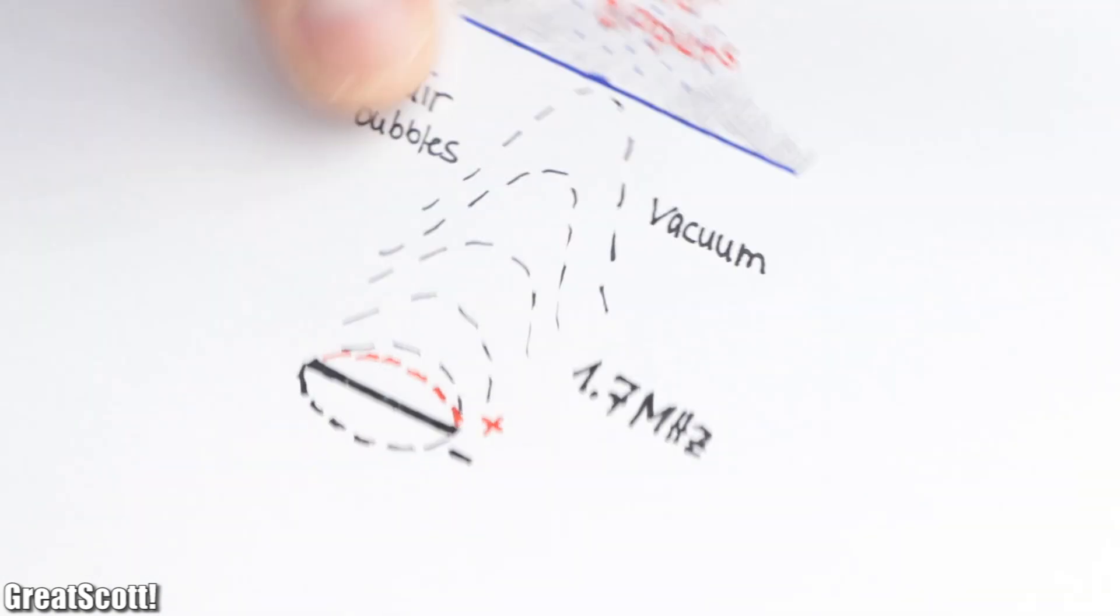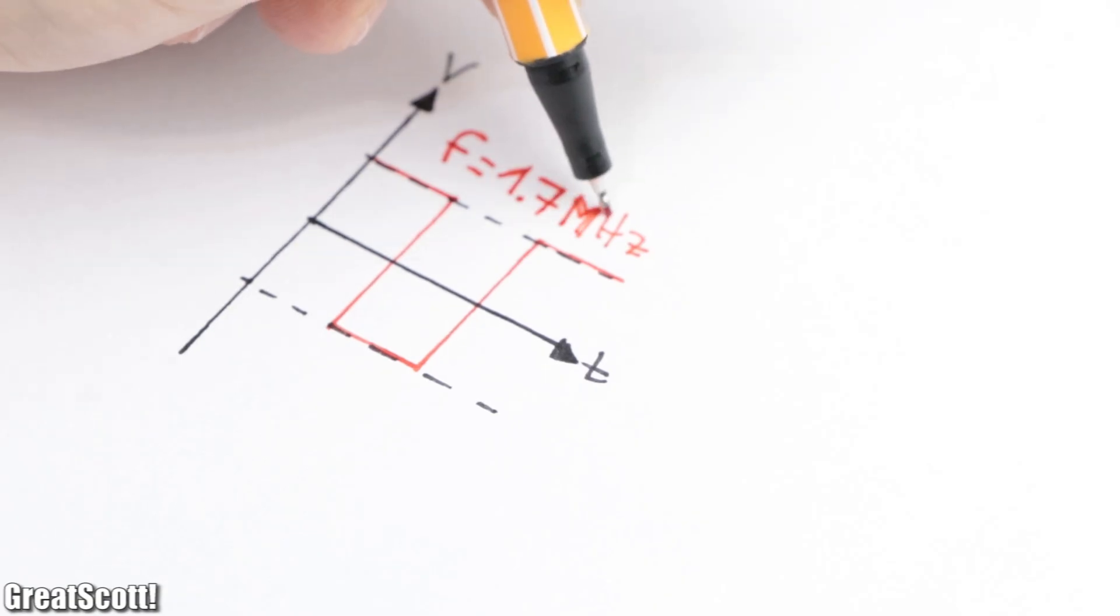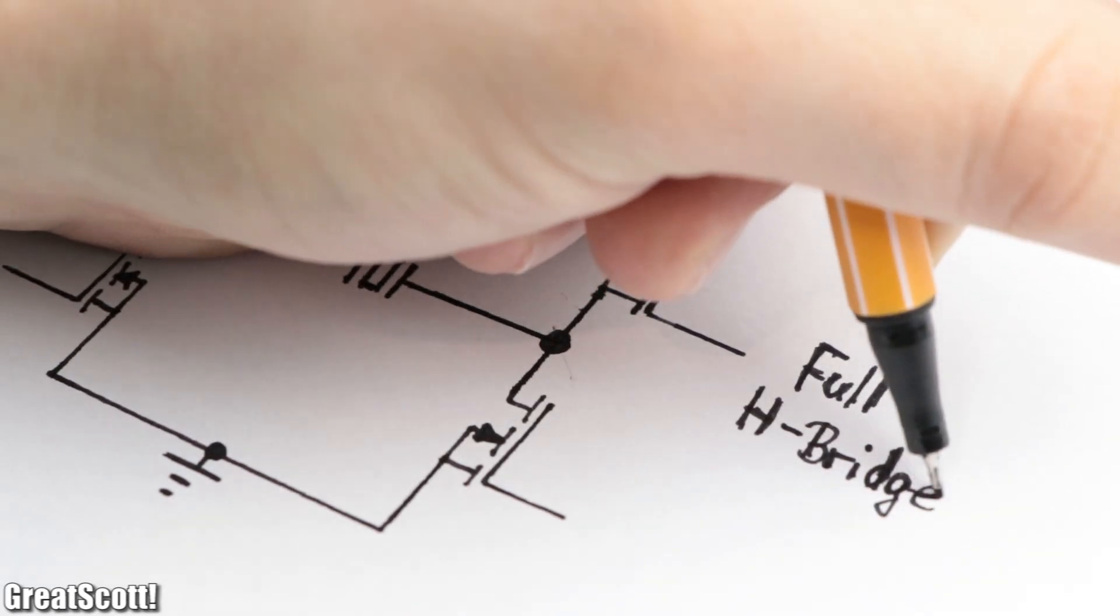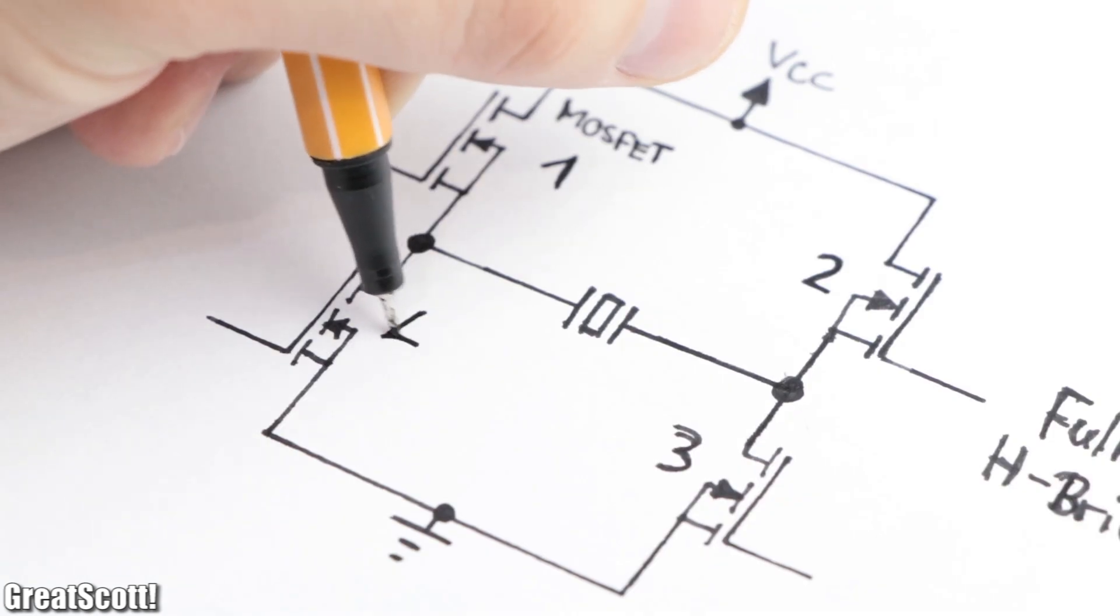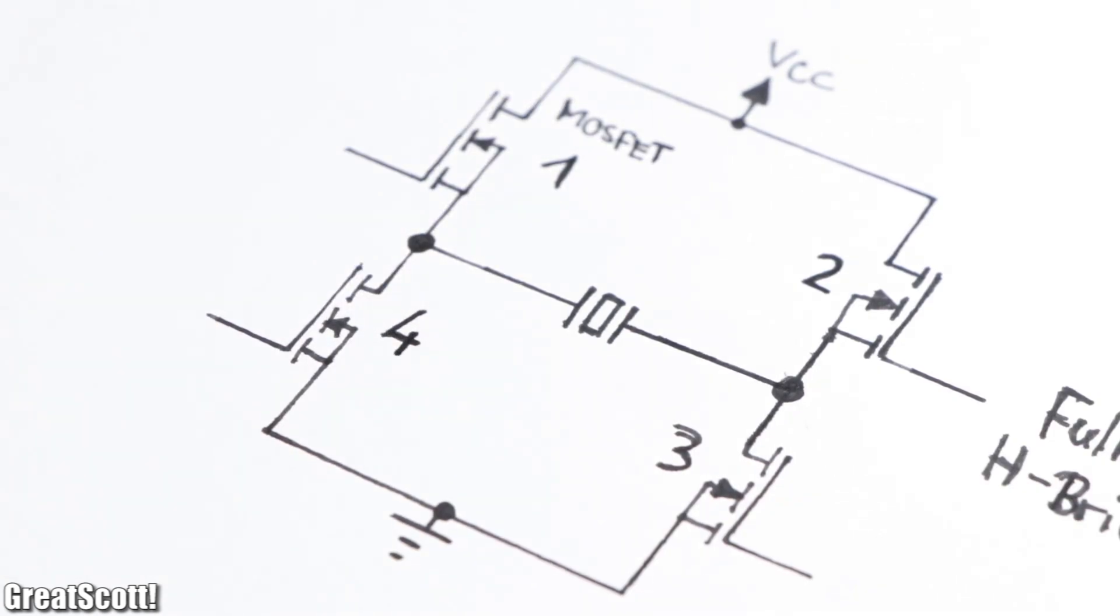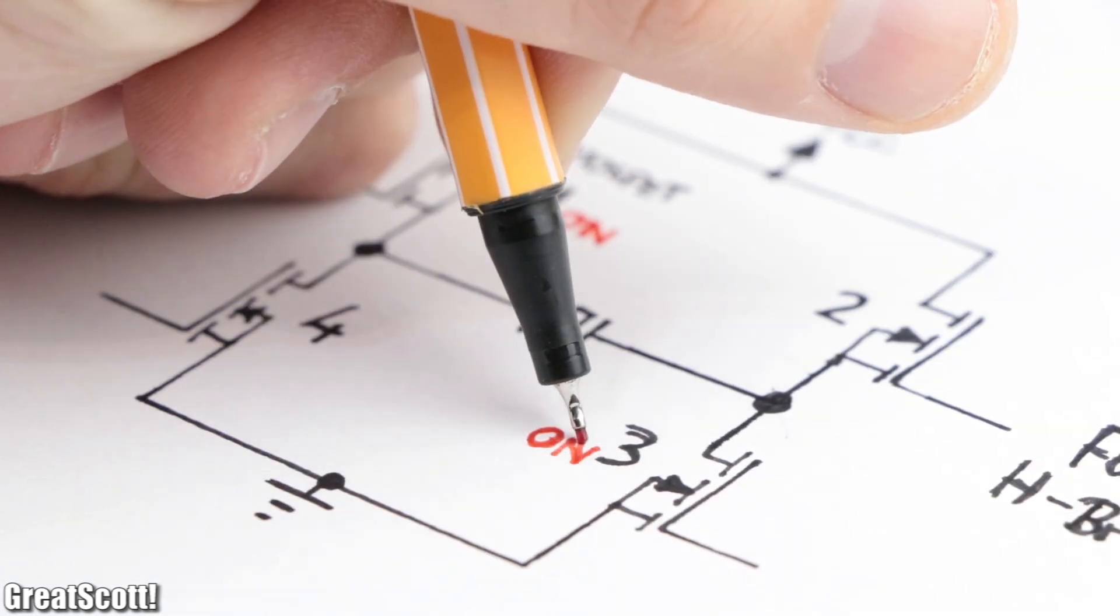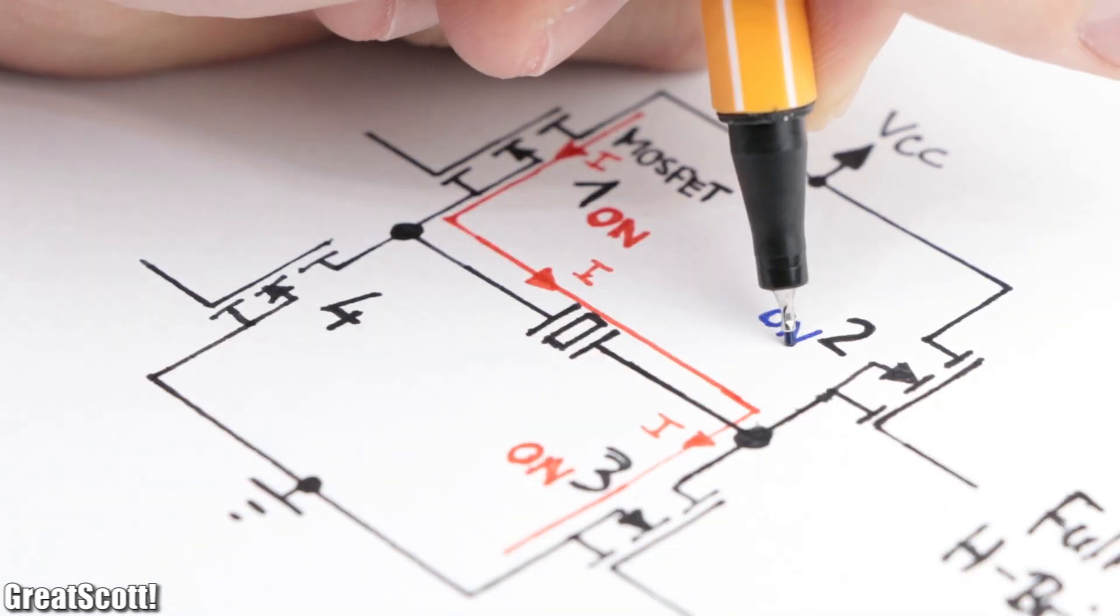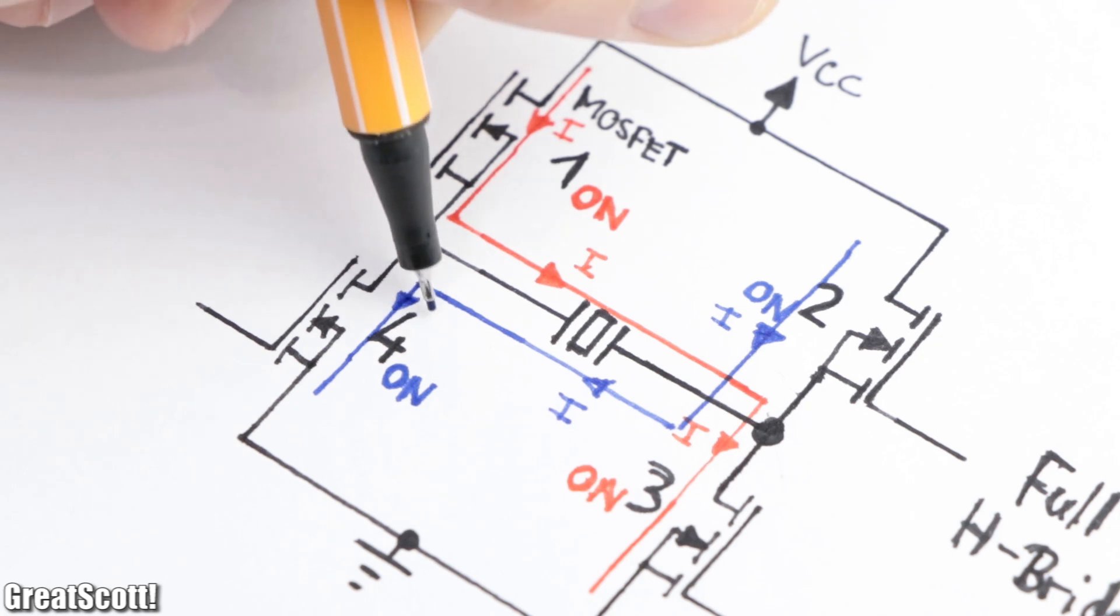And now with the theory out of the way, how can we create the required 1.7 MHz AC signal? One way to do so is by utilizing a full H-bridge which consists of 4 MOSFETs. By turning on MOSFET 1 and 3, current would flow from left to right. And by turning on MOSFET 2 and 4, current would flow from right to left. Which is obviously alternating and thus an AC signal.